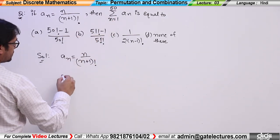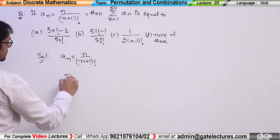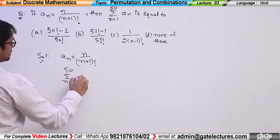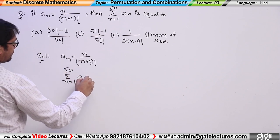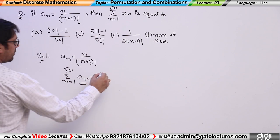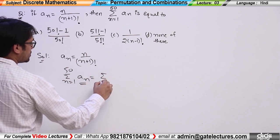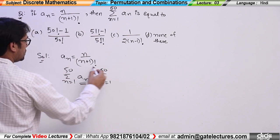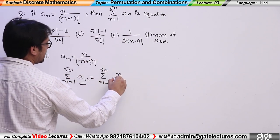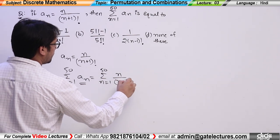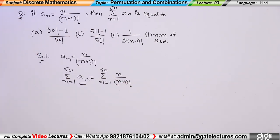We have to find the summation from n=1 to 50 of a_n, where a_n = n / (n+1) factorial.